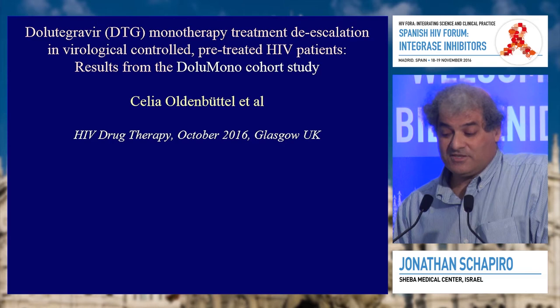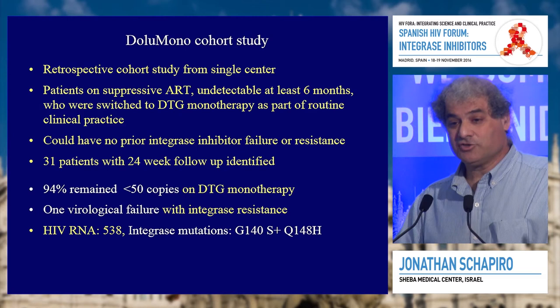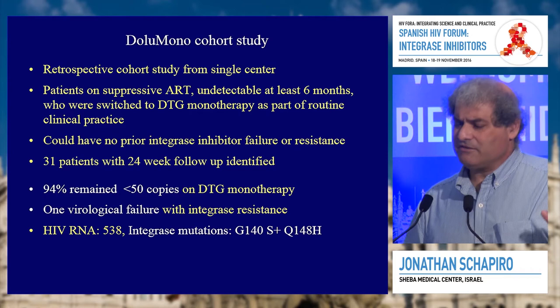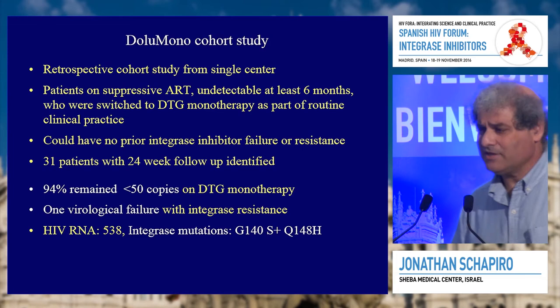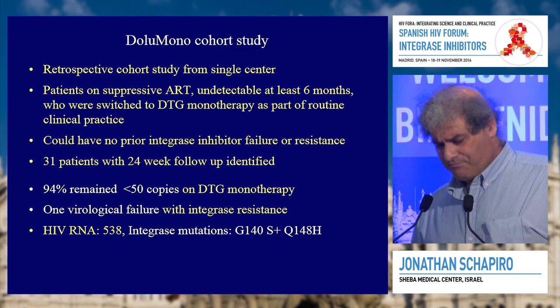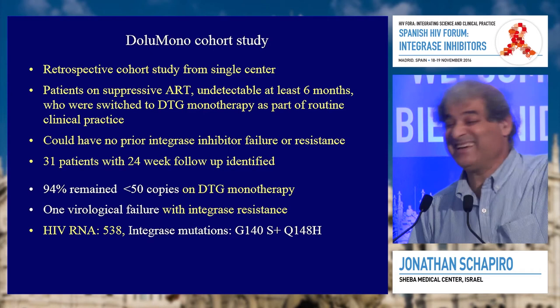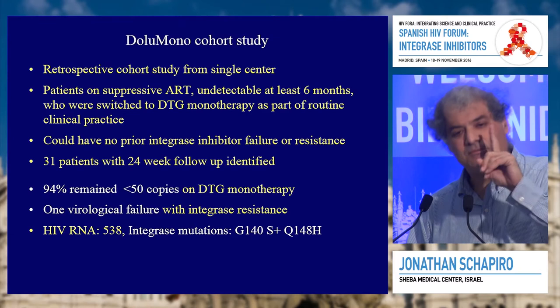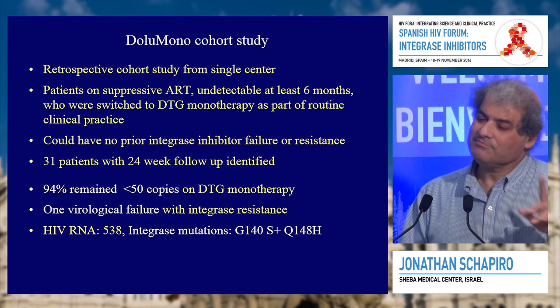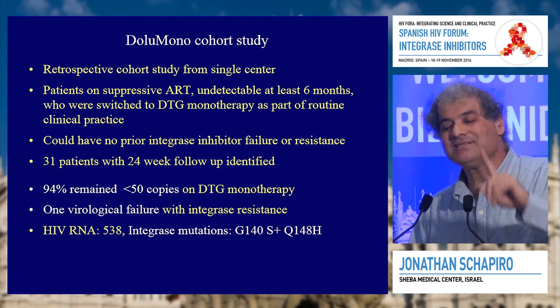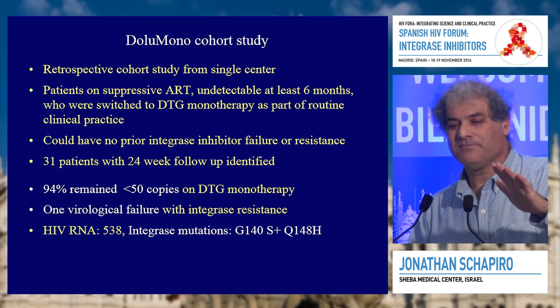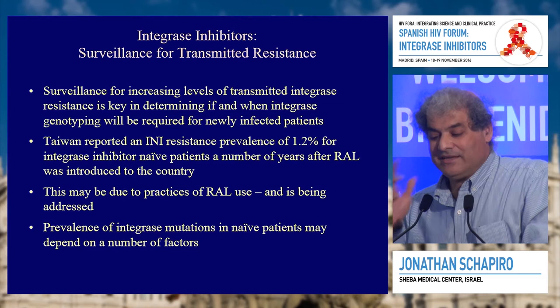There are studies using dolutegravir in monotherapy and dual therapy. The Dolomona review from a German clinic switched suppressed patients with reasons to avoid NRTIs to dolutegravir monotherapy. Of 31 patients with 24-week data, 94% remained undetectable. One patient stopped on their own, and one patient failed with resistance. That's one out of 31 — but we never see this when giving dolutegravir as triple therapy with Truvada. This tells us we have to be a little bit cautious.